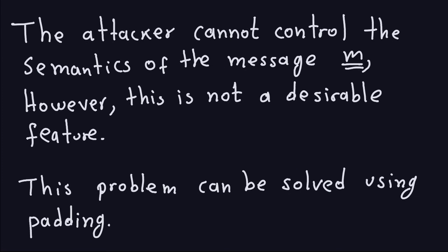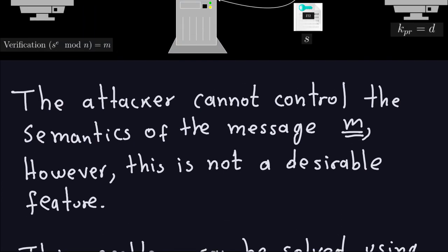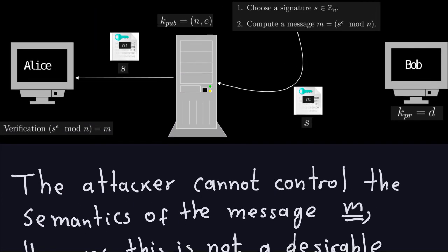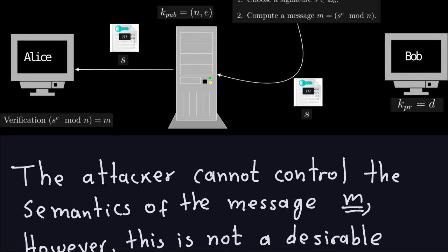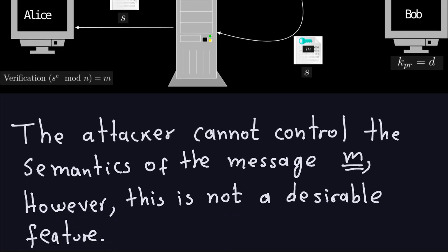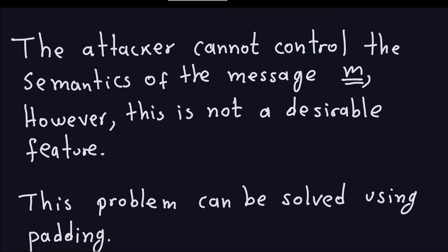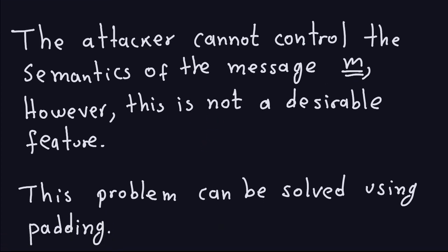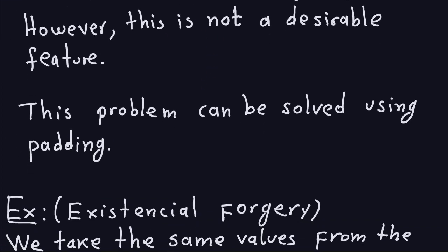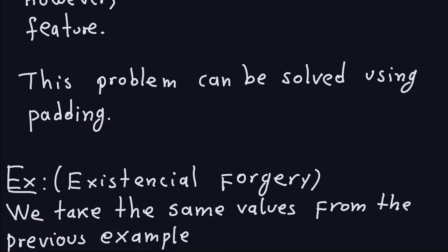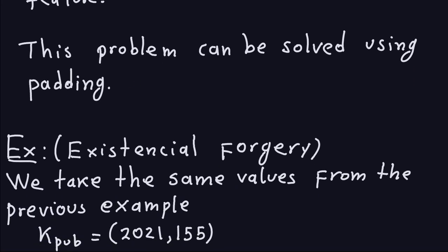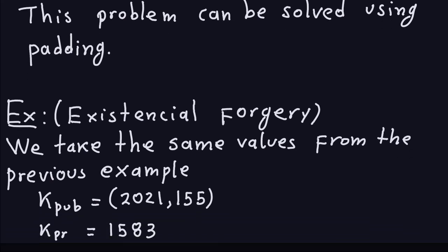This problem can be solved using padding — adding a little bit of randomness to the way the signature is sent. This schoolbook RSA is usually not used in practice; in practice you would do this with RSA-PSS padding. Before we finish the video, let me give you an example to be a little bit more clear on the existential forgery.